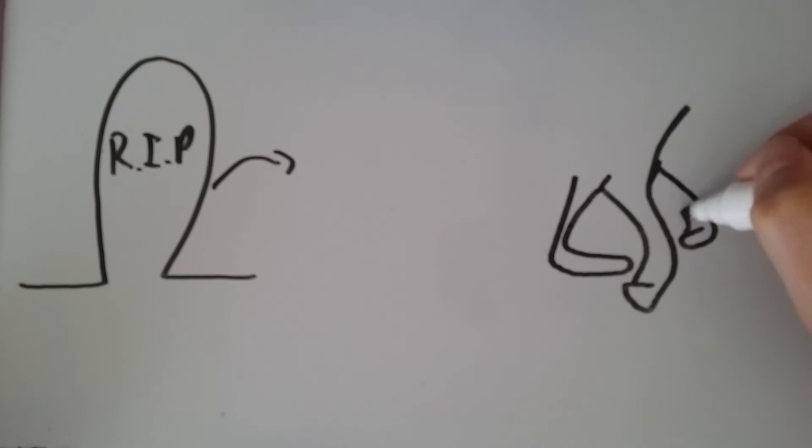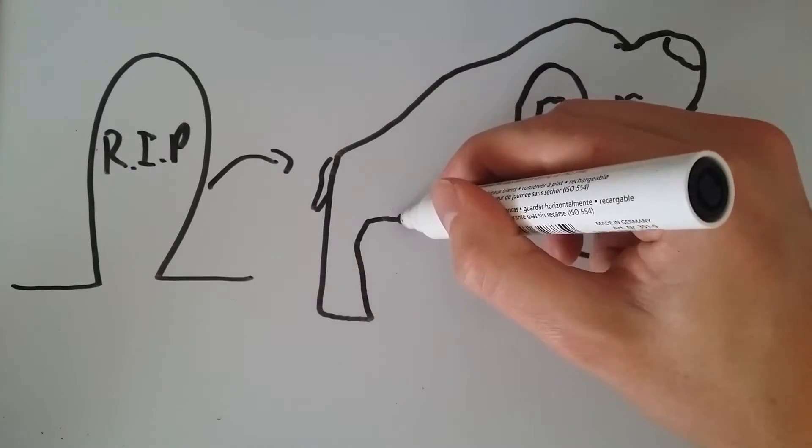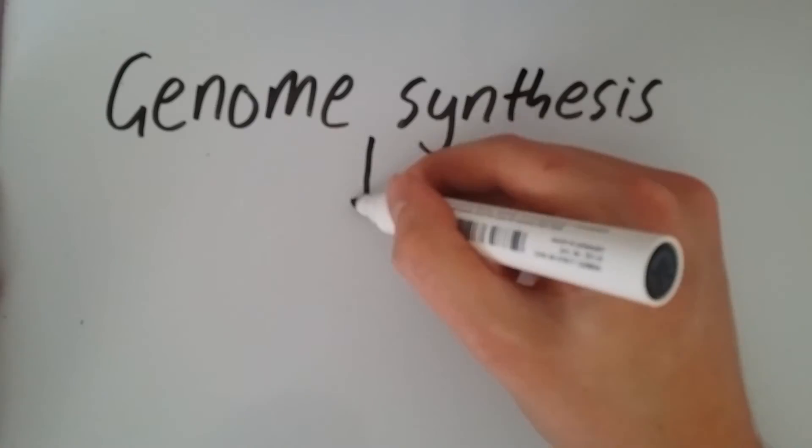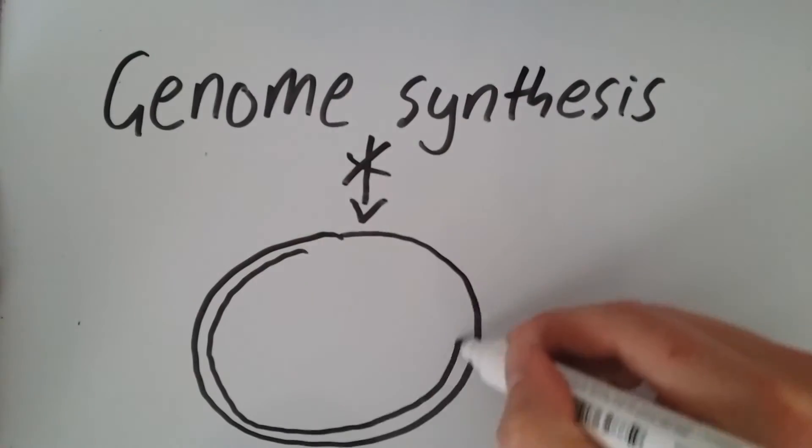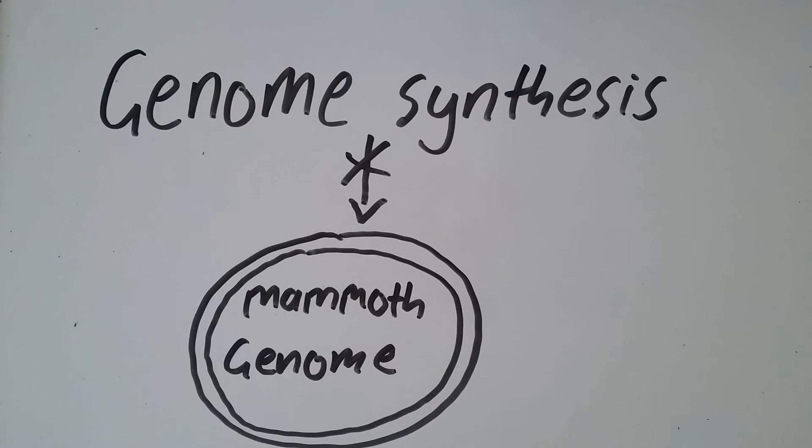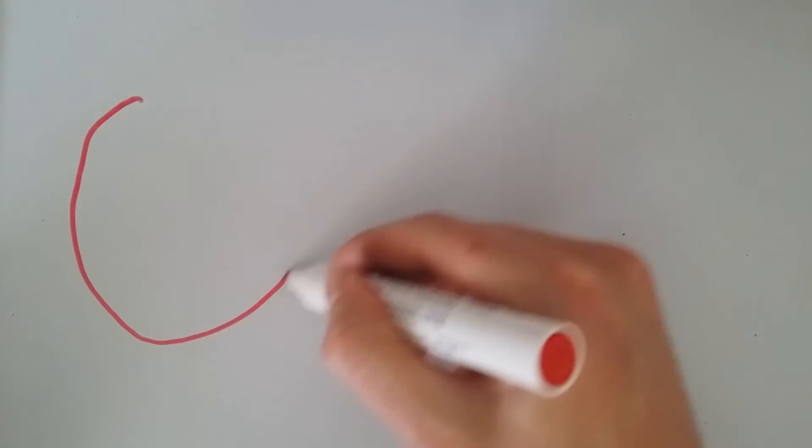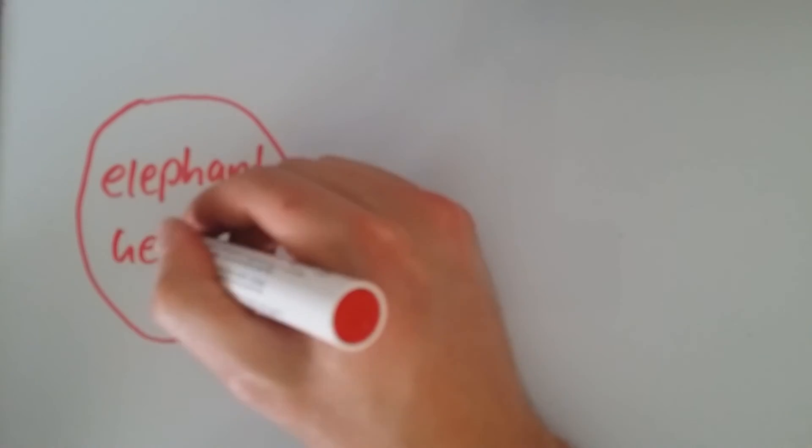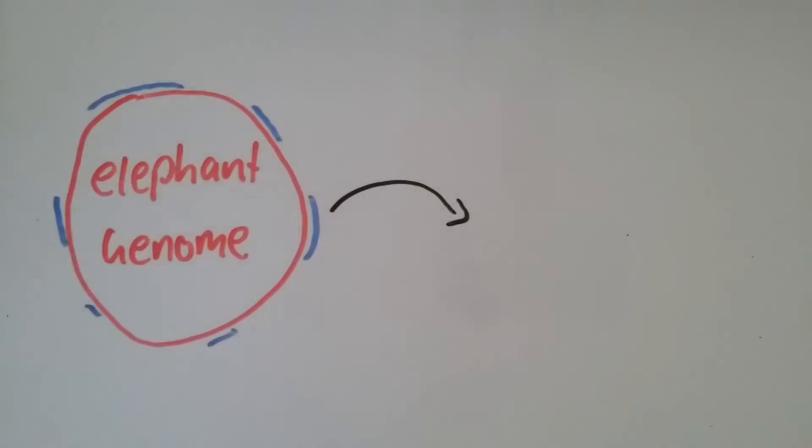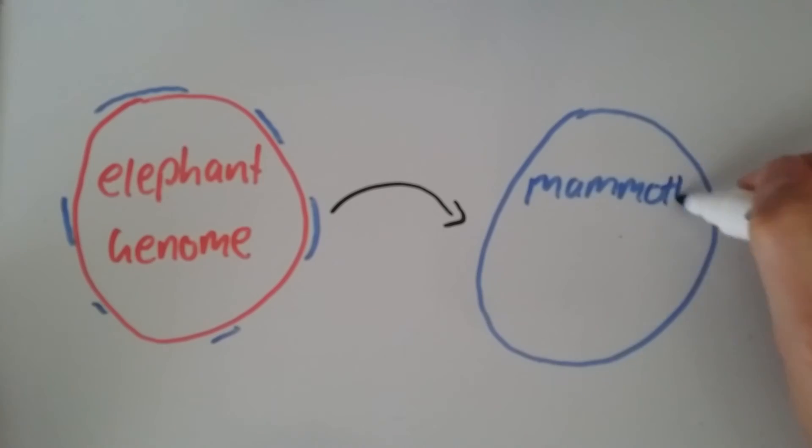A potential application of MAGE is bringing the mammoth back from extinction. The mammoth genome is known, however building this genome is not yet possible. Craig Venter's genome synthesis technologies cannot yet build such a large genome. By starting with an elephant genome and using oligos based on the mammoth's genome, it is possible to transform the elephant's genome into the mammoth's genome using MAGE.